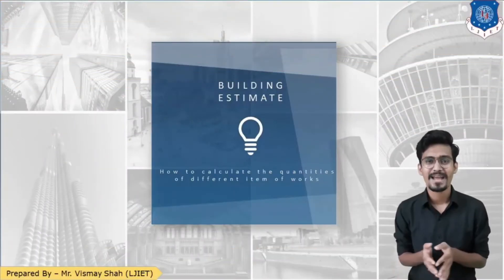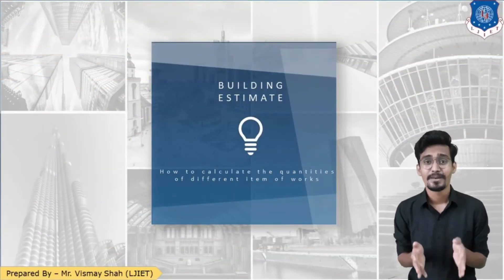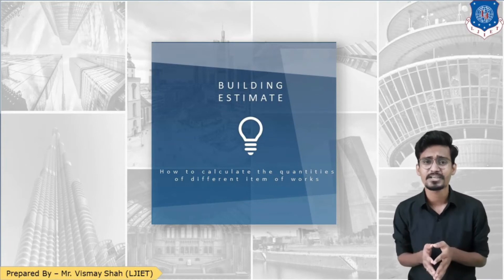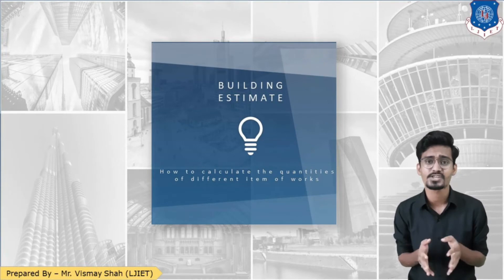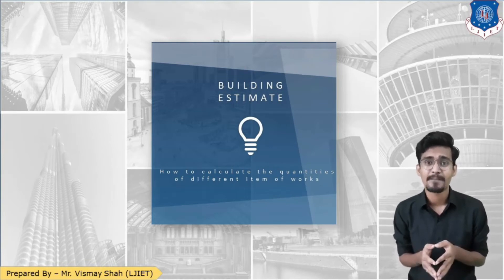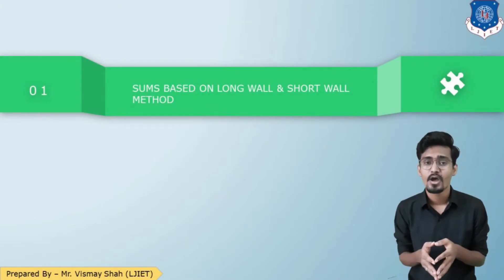Hello everyone, welcome back to another session of building estimate — how to calculate the quantities of different items of work. In the previous session we covered a sum based on the long wall and short wall method, in which we calculated seven quantities and prepared an abstract sheet. Today we are going to see another sum based on the long wall and short wall method.